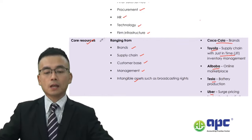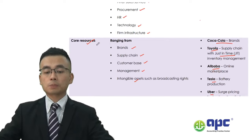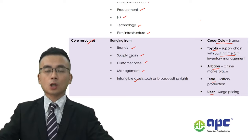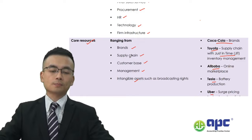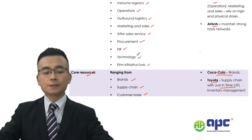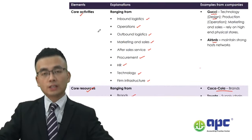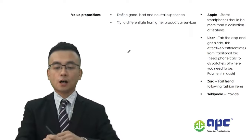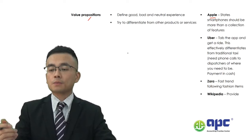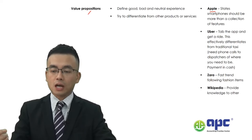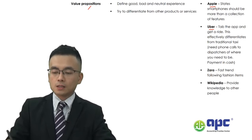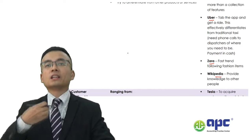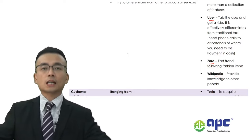If you lose your brand, consider whether another core resource in your company — such as the supply chain — can maintain the business. Changing one element will cause changes in other elements. Another element of strategy is the value proposition — how we define the experience of using a product. For example, when I use an iPhone, it's quite simple — that's Apple's value proposition. For Uber, it's quite cheap. For Zara, it's fast trend. For Wikimedia, it's all about knowledge — you can learn a lot from it.